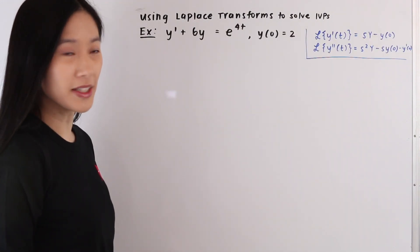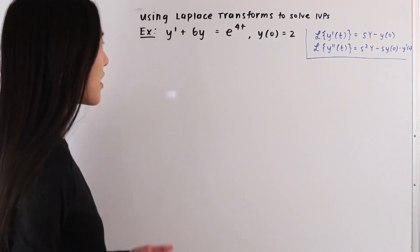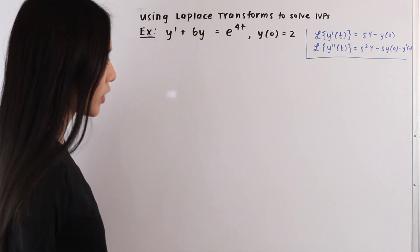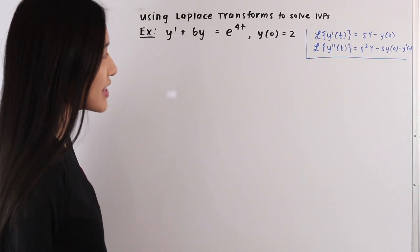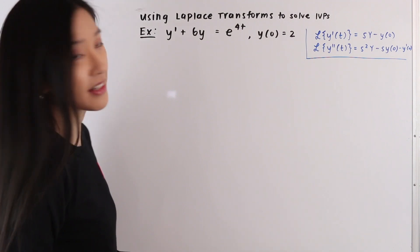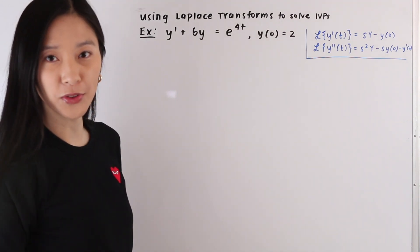So let's go ahead and take a look at this example. We have y' + 6y = e^(4t), and we're given the initial condition y(0) = 2.